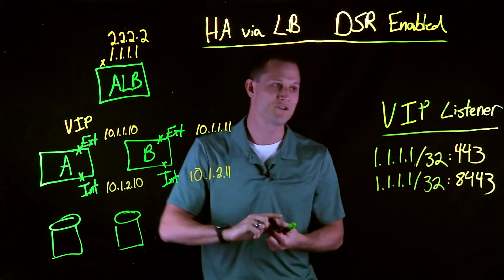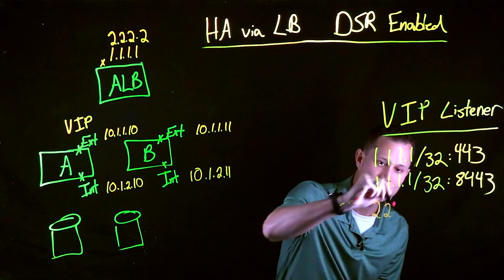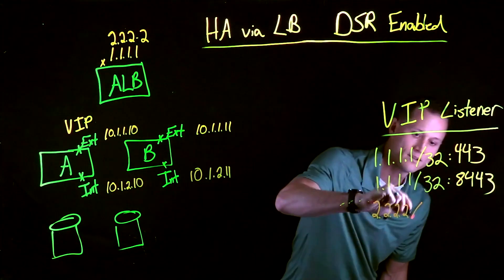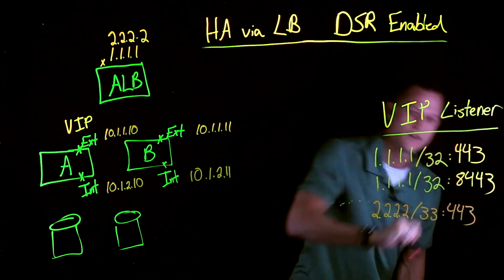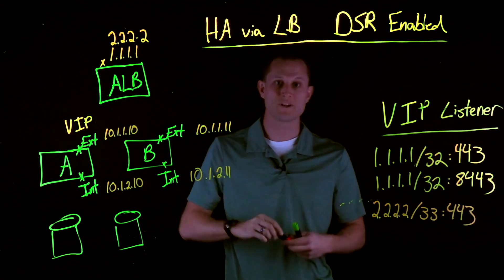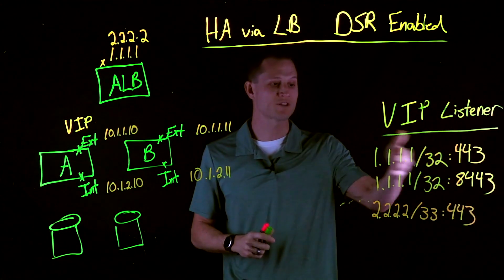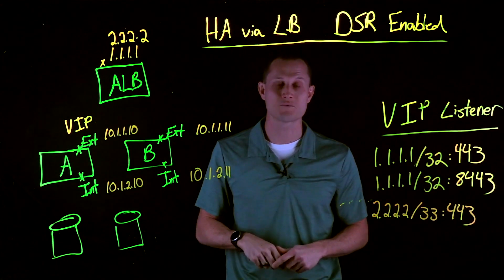What if the ALB had yet another unique public IP? 2.2.2.2. The same example would apply. We'd have a VIP number 2, and now our VIP listener could look like this. This allows us to have multiple public IP configurations and multiple backend IP configurations as well.